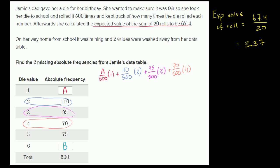Plus 75 over 500 times five, plus 75 over 500 times five, finally plus B over 500 times six, this is going to give us our expected value of a roll, which is going to be equal to 3.37. So all of this is equal to 3.37.